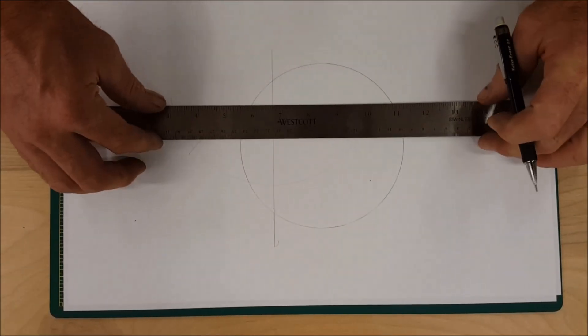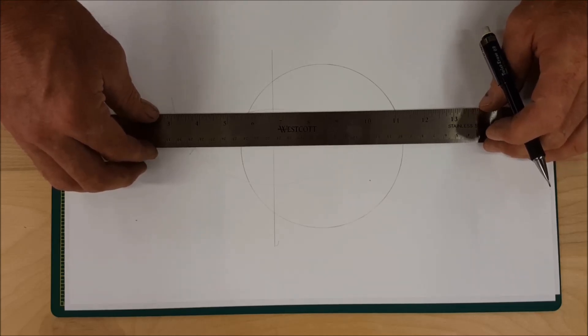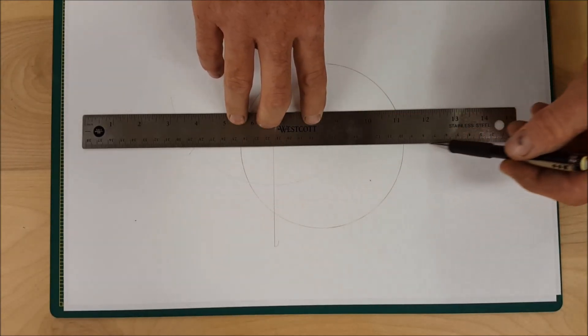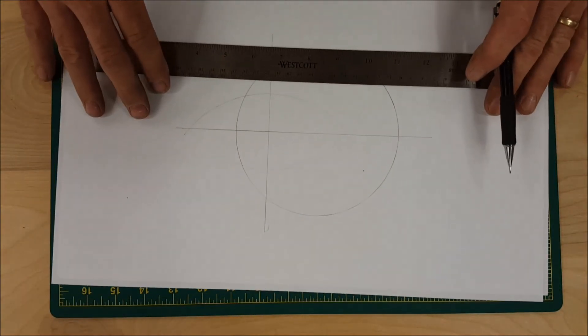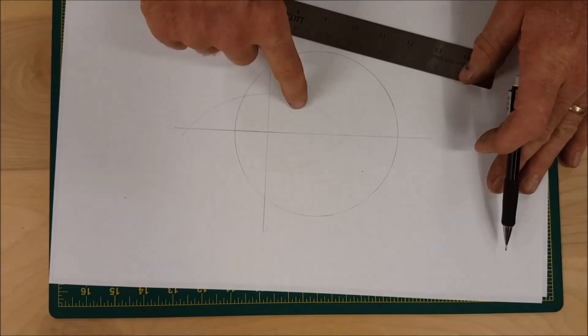Then you run your straight edge through the two points of the arc and strike a line. That is now a bisected circle.